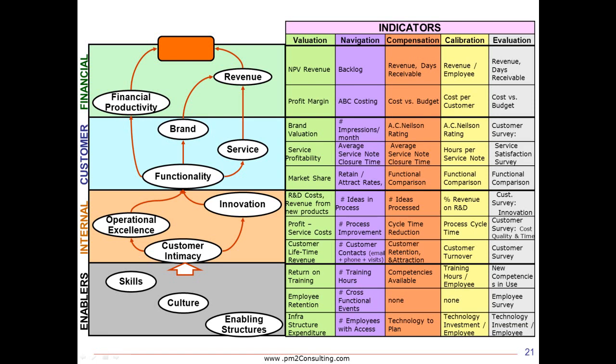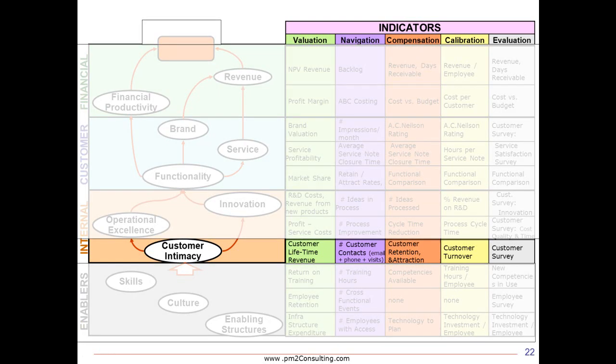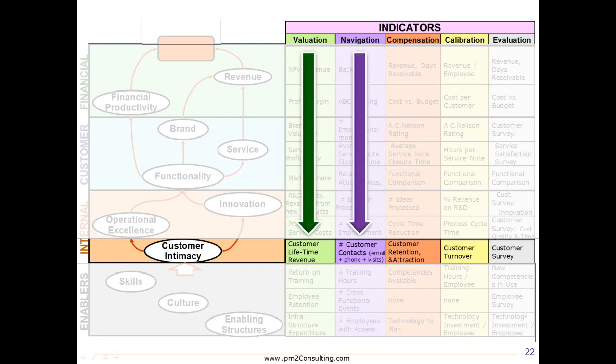Let's take an example. If we take a look at, say, customer intimacy, what we'll see is for a valuation view, we might want to take a customer lifetime revenue value equation to sort out the valuation relationship of customer intimacy. On the other hand, navigation, to make decisions moment to moment about whether we're working closely enough with our customers, I might want to use a more dynamic indicator like the number of customer contacts, things like emails, voicemails, visits. Those things are going to give me an ongoing and very reactive trend of how we're doing on customer intimacy.